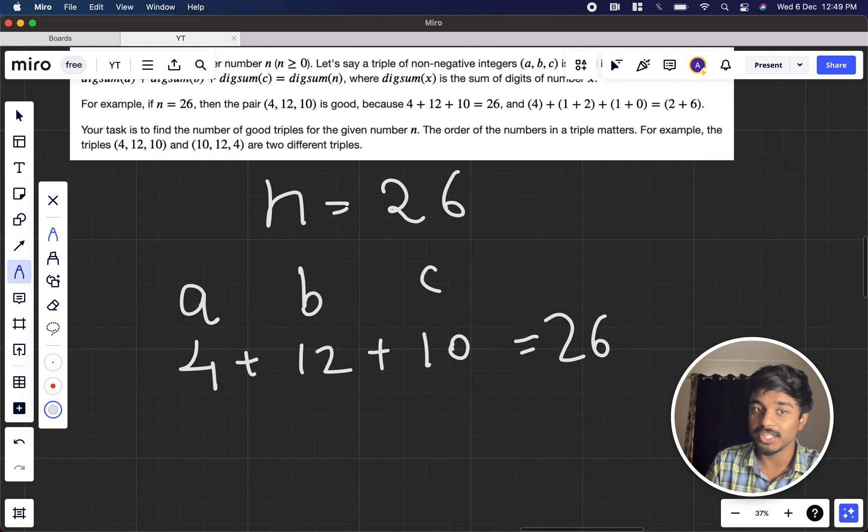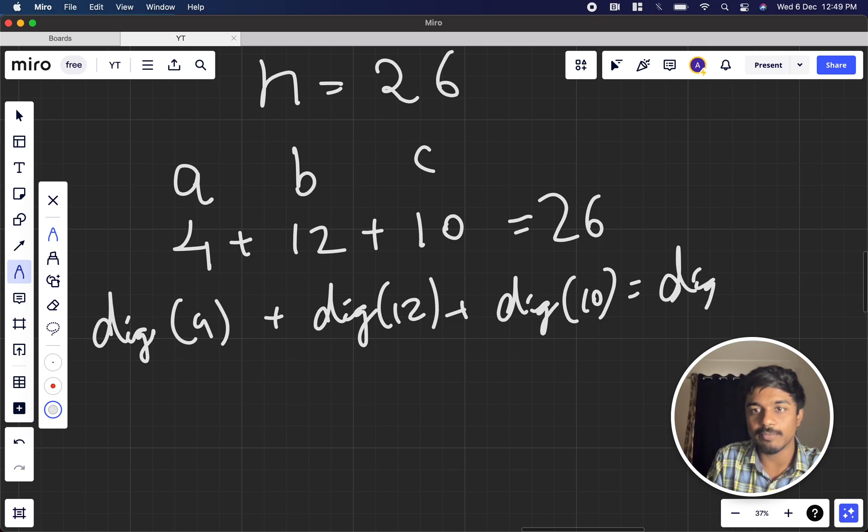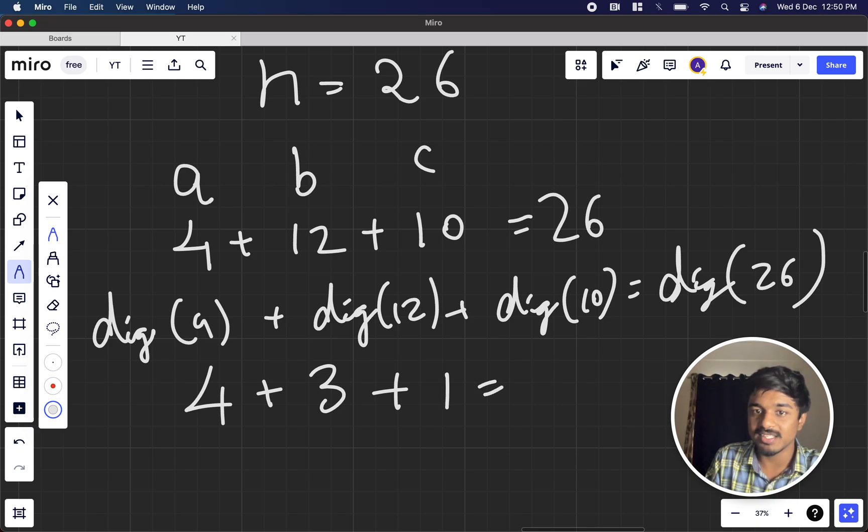What we need to do is find the digit sum of each one. So the digit sum of 4 plus digit sum of 12 plus digit sum of 10 equals digit sum of 26. The digit sum of 4 is 4. Plus digit sum of 12 is 1 plus 2, that's 3. Plus digit sum of 10 is 1 plus 0, that's 1. And digit sum of 26 is 2 plus 6, that is 8.